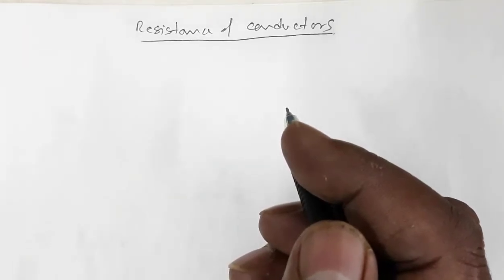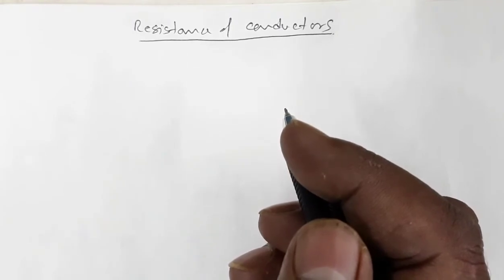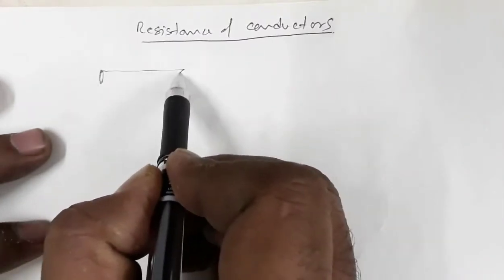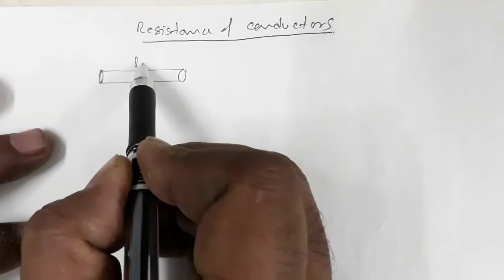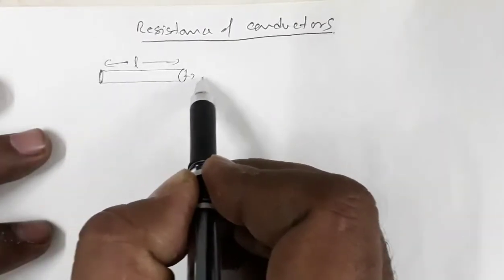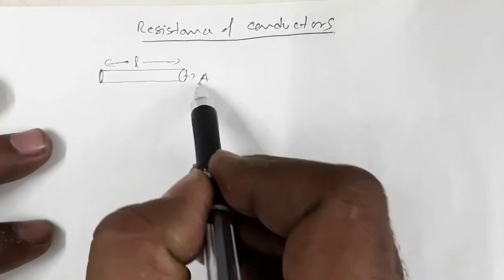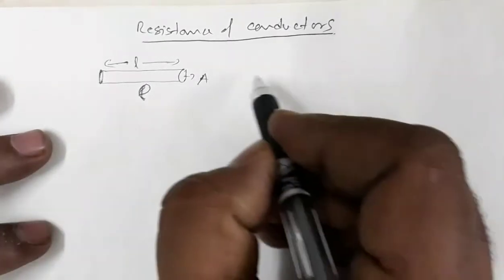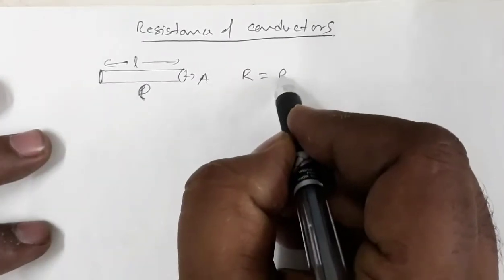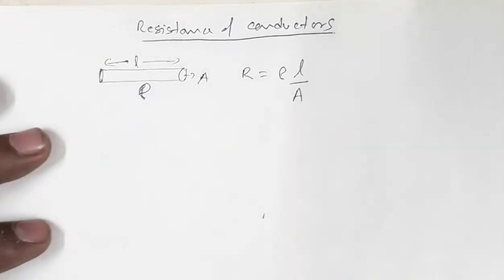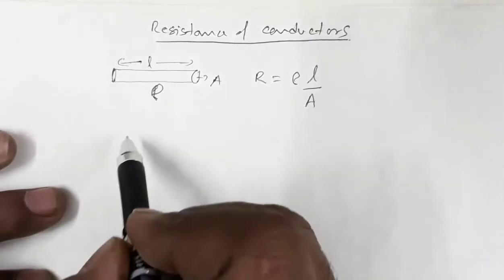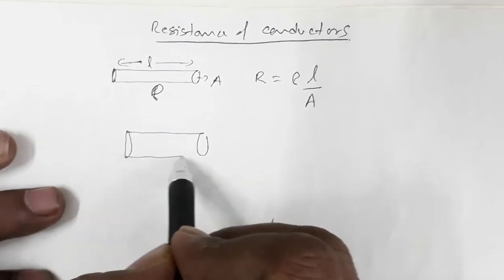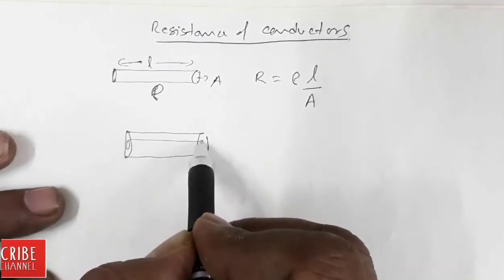In this video, we are going to observe the resistance of conductors of various shapes. If you have a normal solid conductor of length L and cross-sectional area A, and rho is the resistivity, then resistance is R equal to rho L by A.